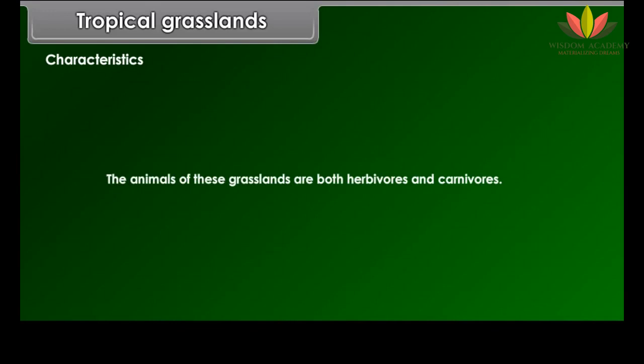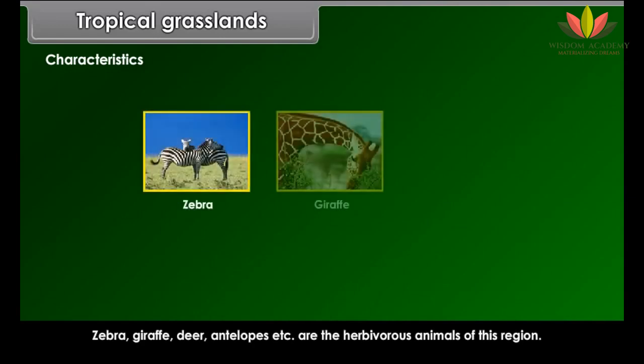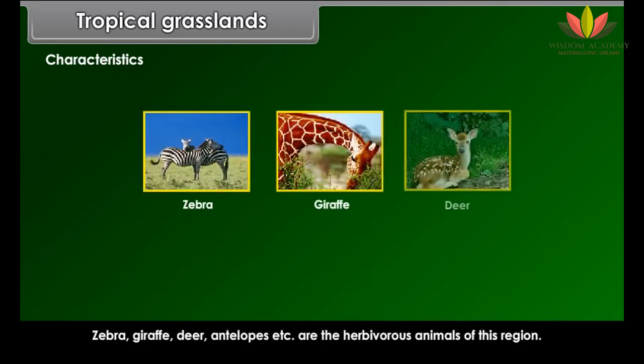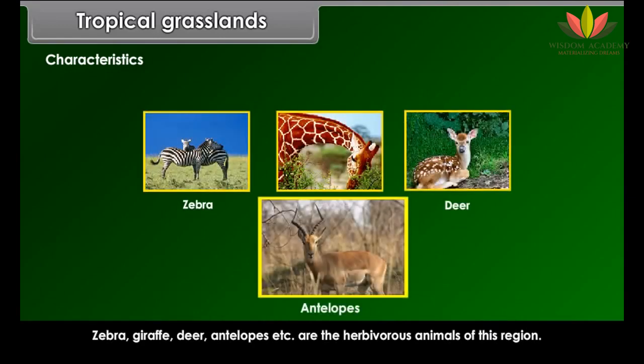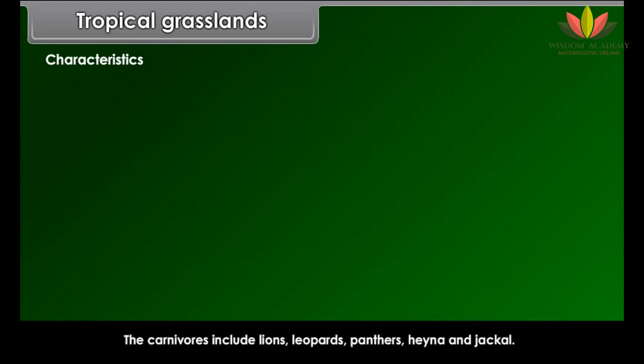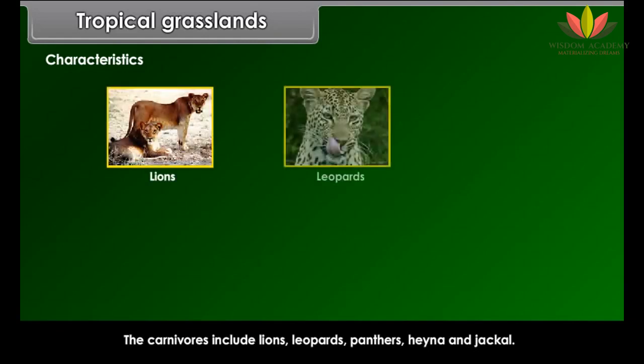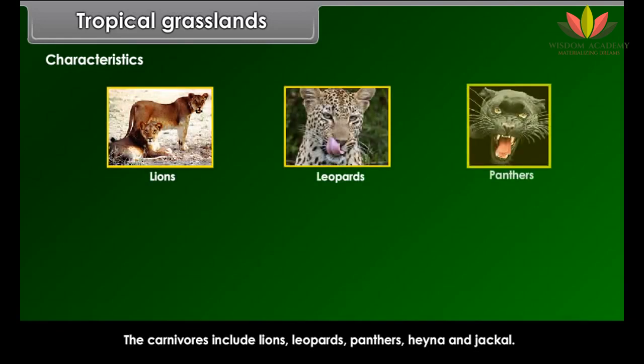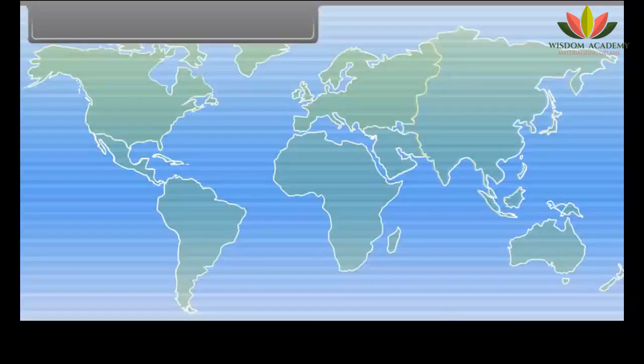The animals of tropical grasslands are both herbivores and carnivores. Zebra, giraffe, deer and antelopes are the herbivorous animals of this region. The carnivores include lions, leopards, panthers, hyena and jackal.